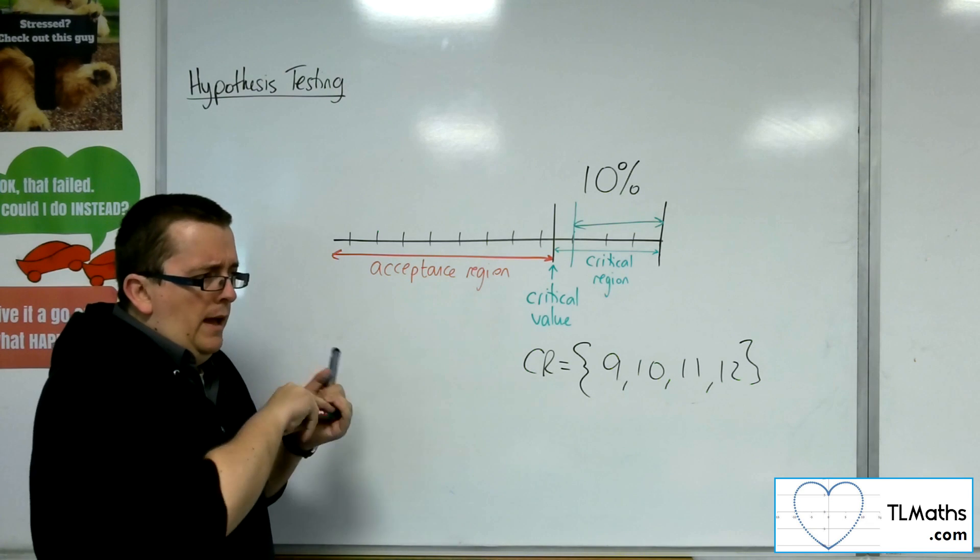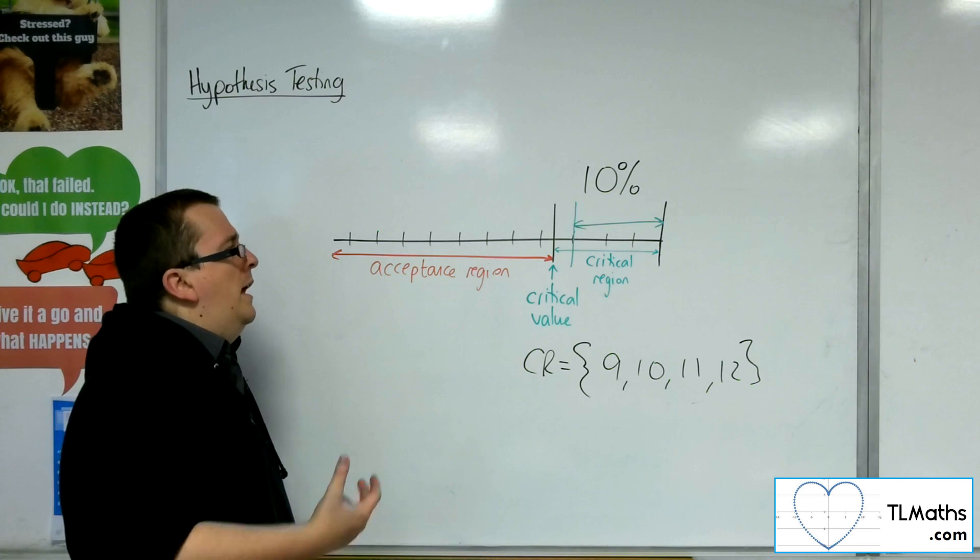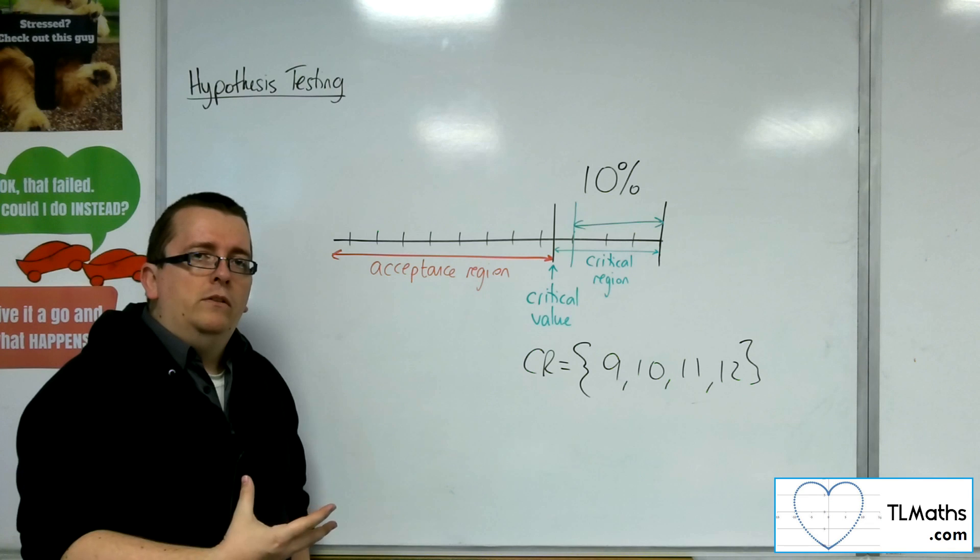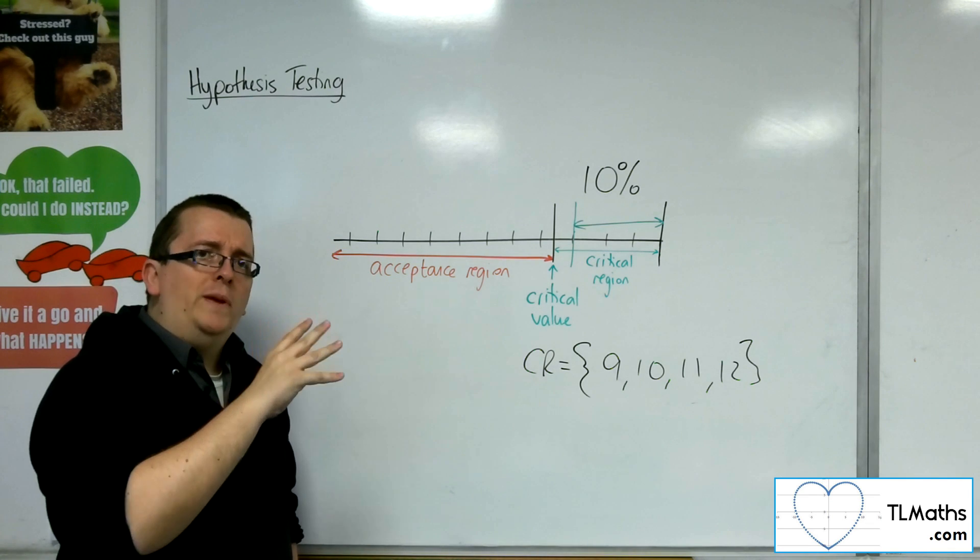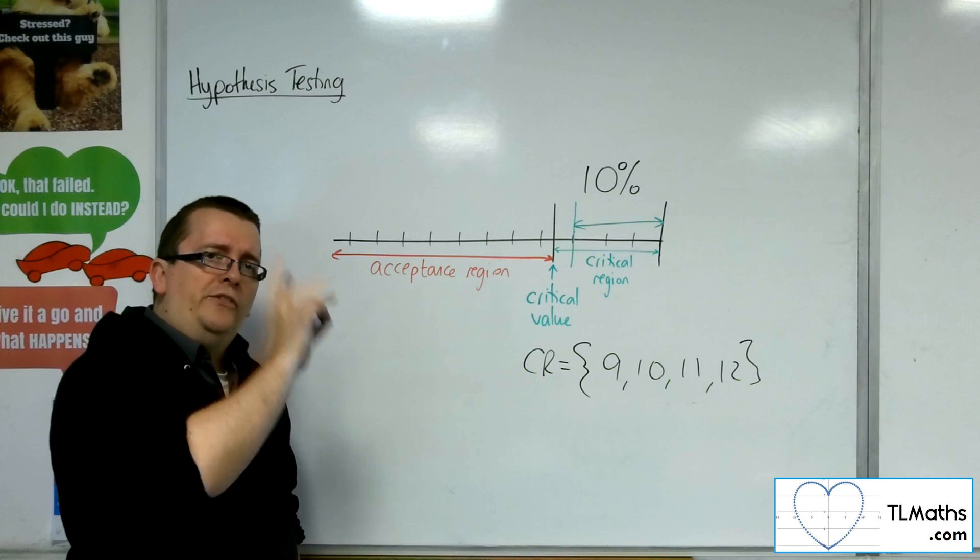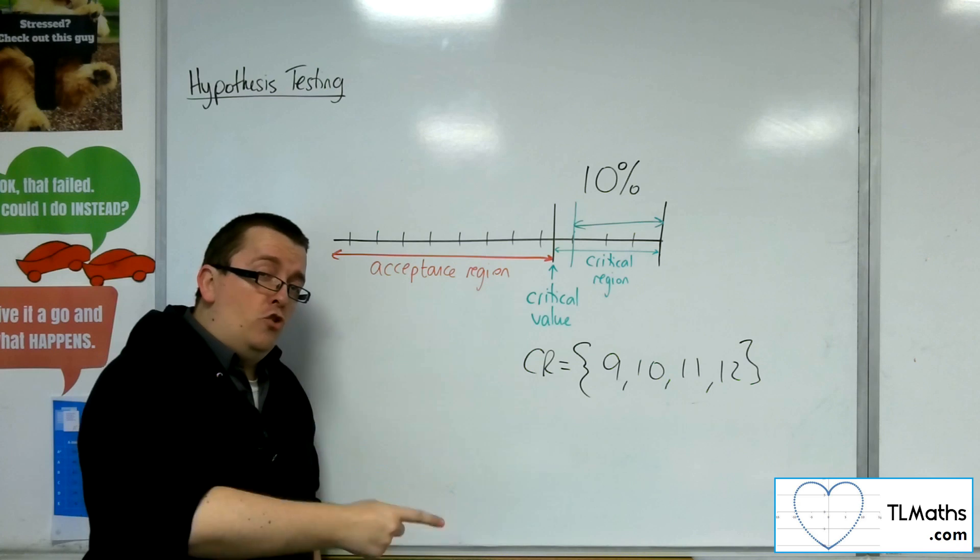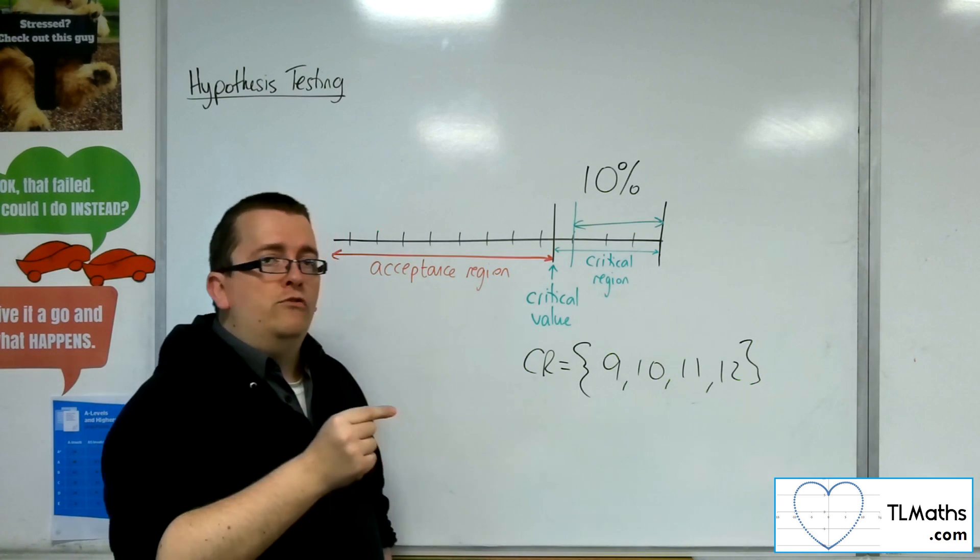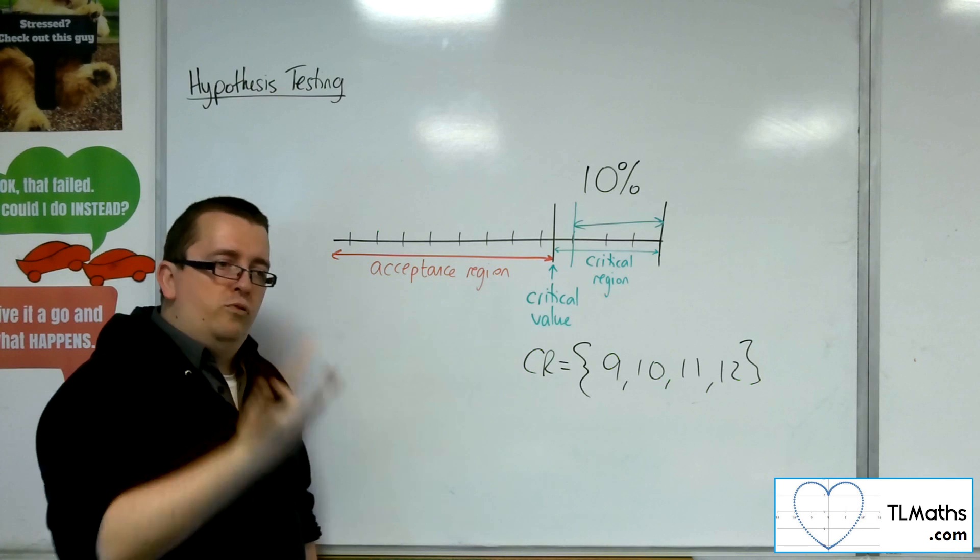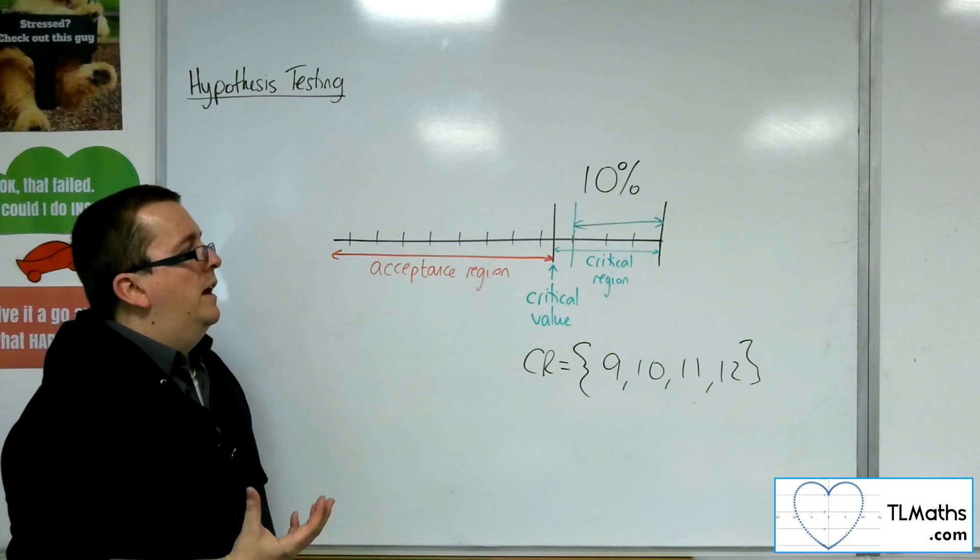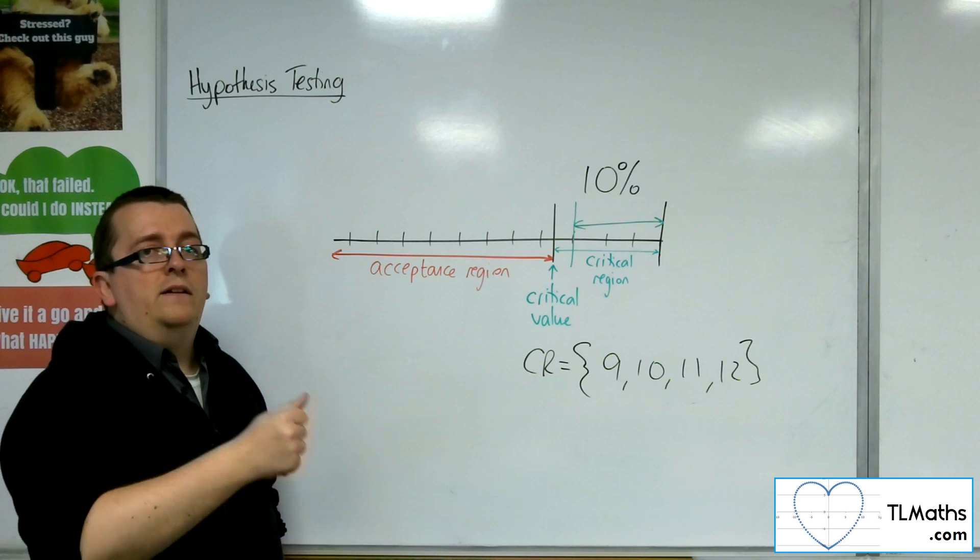So thinking back to the exam boards in question, OCR-MEI certainly will not be asking for that distinction between the significance levels, between the significance level set and the actual significance level. Really what you want to make sure on and have a look through is the specification for the board you're doing just to see if there is that distinction. And it will probably come through in textbooks that you buy that are specifically for that board.